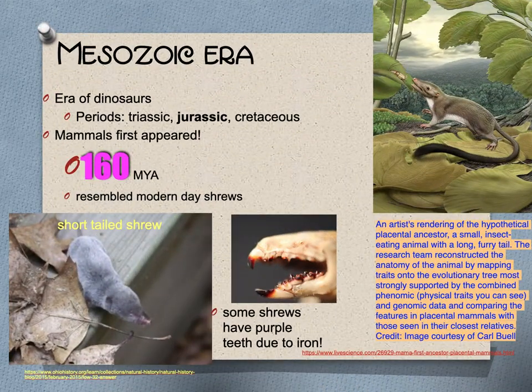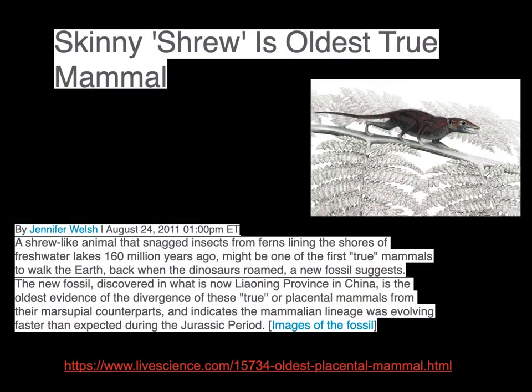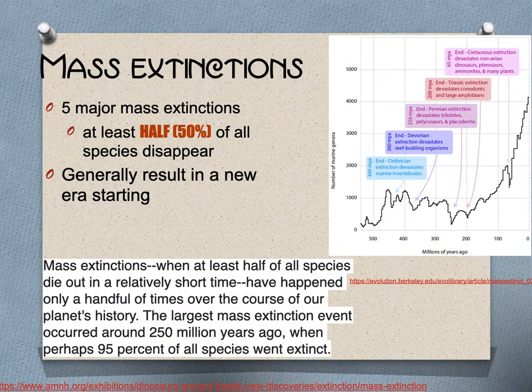The Mesozoic Era is the era of the dinosaurs, with the periods Triassic, Jurassic, and Cretaceous. This is where mammals first appear, about 160 million years ago, and they resembled modern-day shrews. Some shrews have purple teeth due to the iron in their diets. The first shrew-like mammal looked different from what we have today — they had long tails. The skinny shrew is considered the oldest true mammal.